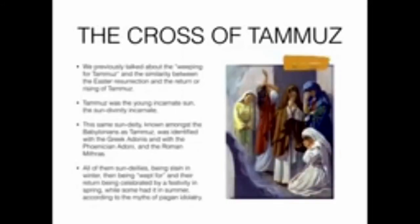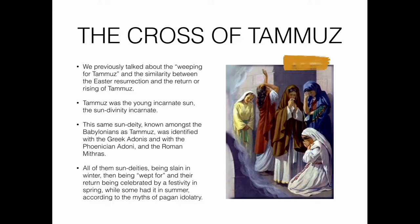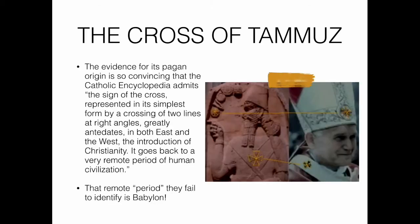Tammuz was the young incarnate sun — the sun divinity incarnate. This same sun deity known among the Babylonians as Tammuz was identified with the Greek Adonis, the Phoenician Adoni, and the Roman Mithras — all sun deities being slain in the winter, wept for, and then celebrated with a festivity in spring. The Catholic Encyclopedia admits: 'The sign of the cross greatly antedates in both east and west the introduction of Christianity. It goes back to a very remote period of human civilization.' Even the Catholic Encyclopedia admits the cross predates Christianity — that remote period is Babylon.